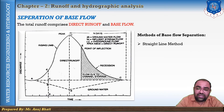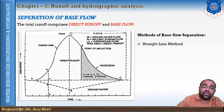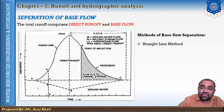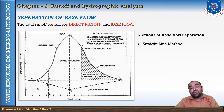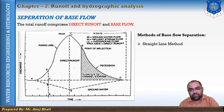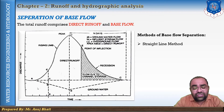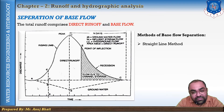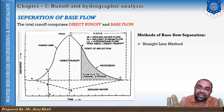For the separation of base flow, the first method is the straight line method. In this method, separation is made by a straight line joining point A, which is the initial point, to point C, which is the end point on the recession limb. This method is simply known as the straight line method.